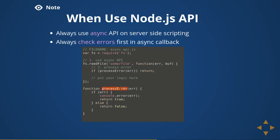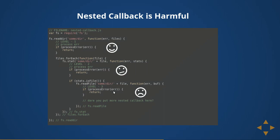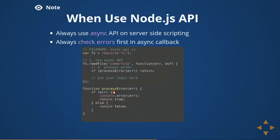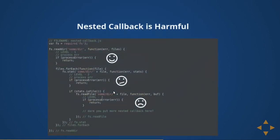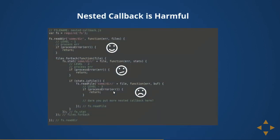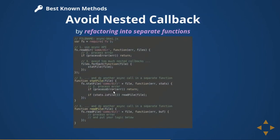If the callback is returning an error object, process and return the error; otherwise return false. However, nested callbacks are harmful. If you have a single callback dealing with an asynchronous operation that's fine, but when you have multiple nested callbacks — getting data from the first callback, looping over it, and calling another API inside that loop — you get callback hell.